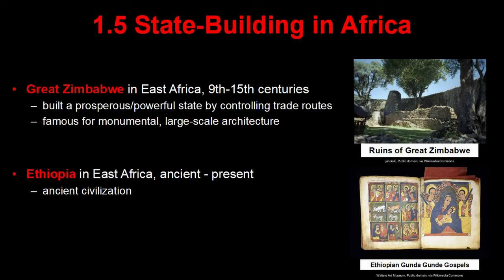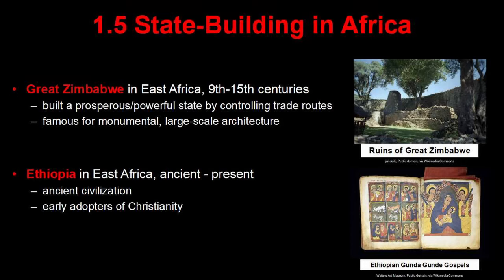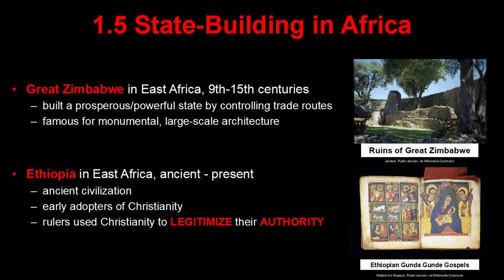Ethiopia is a unique one in Africa — it's the most ancient of the three states that the College Board mentions in the CED. It's been around since Biblical times and was an important state mentioned by ancient Egyptians, the Greeks, the Romans, and many more. They were one of the earliest states to adopt Christianity as their official religion. We'll see in Unit 2 that Islam sweeps through most of Africa, but Ethiopia maintains its Christian identity to this very day. The Ethiopian rulers used Christianity to legitimize their authority, sponsored the building of many churches, and many rulers even claimed to be descended from the Biblical King Solomon.